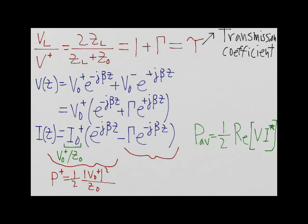Then the backward power or the reflected power P- is equal to one-half times the magnitude of gamma squared multiplied by the magnitude of V0+ squared divided by Z0.